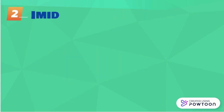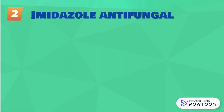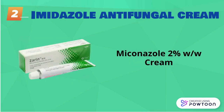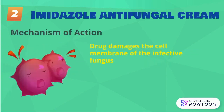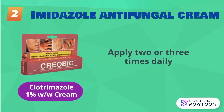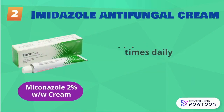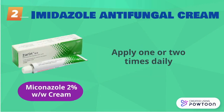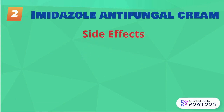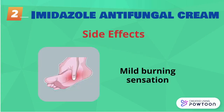The second type of cream is imidazole antifungal cream, such as Clotrimazole 1% cream and Miconazole 2% cream. The drug acts by causing damage to the cell membrane of the fungus, resulting in loss of the permeability barrier of the infected fungus. Clotrimazole cream may be applied two to three times daily, while Miconazole cream may be applied one to two times daily. Side effects from this cream include local irritation such as mild burning sensation and itching.